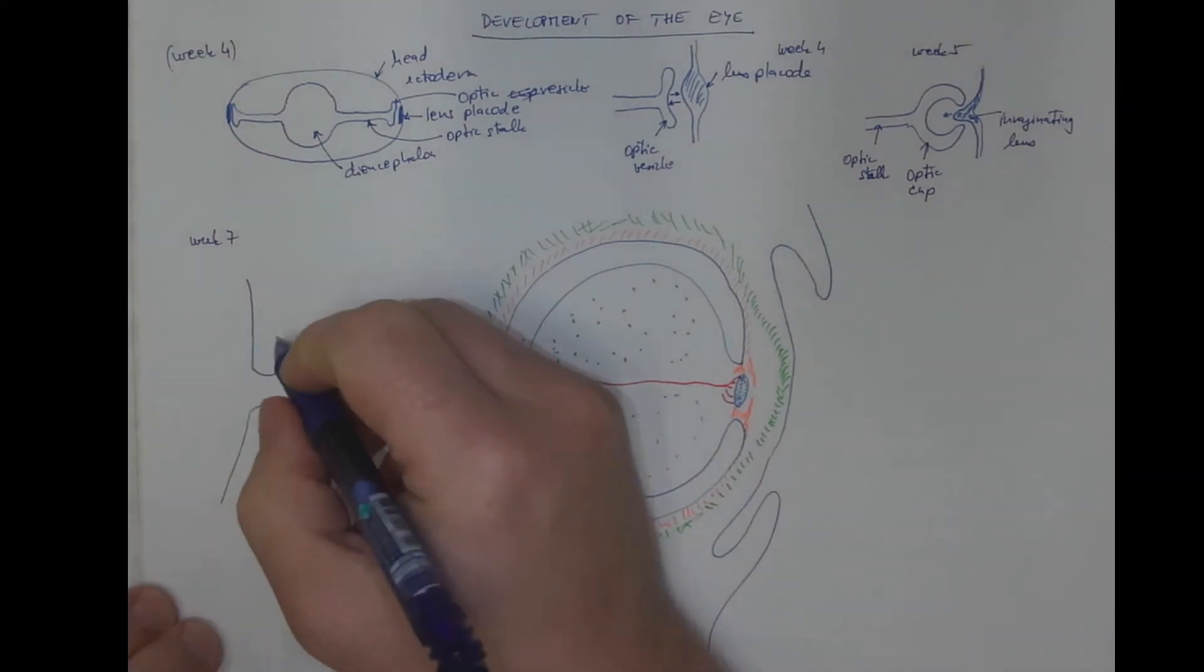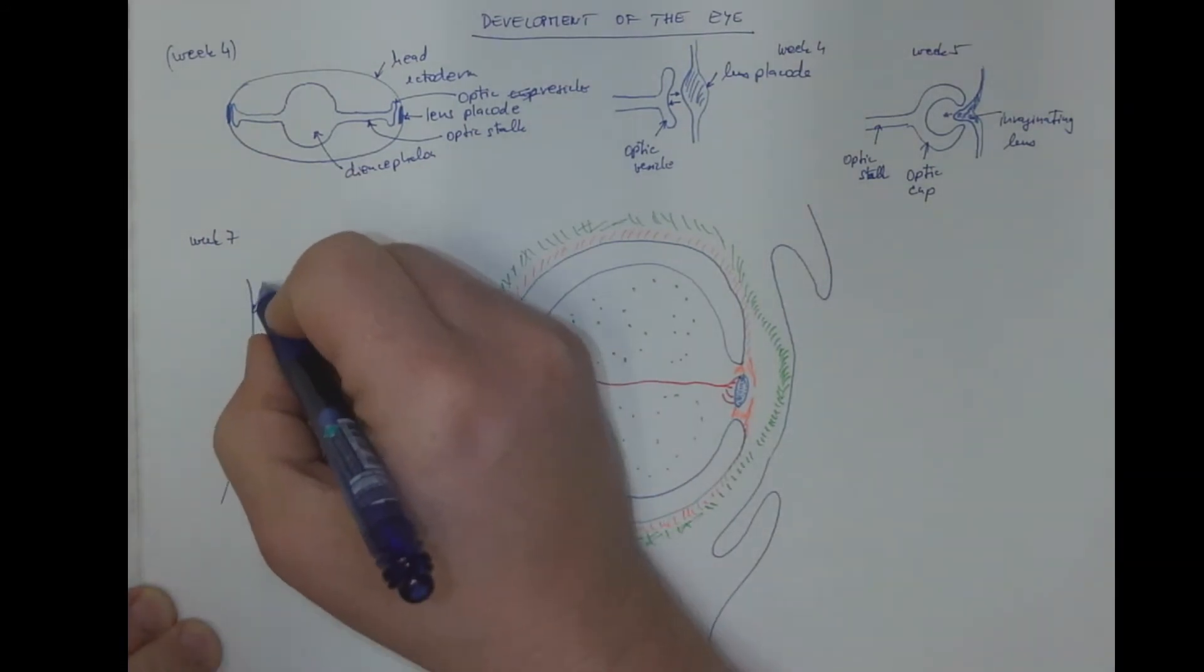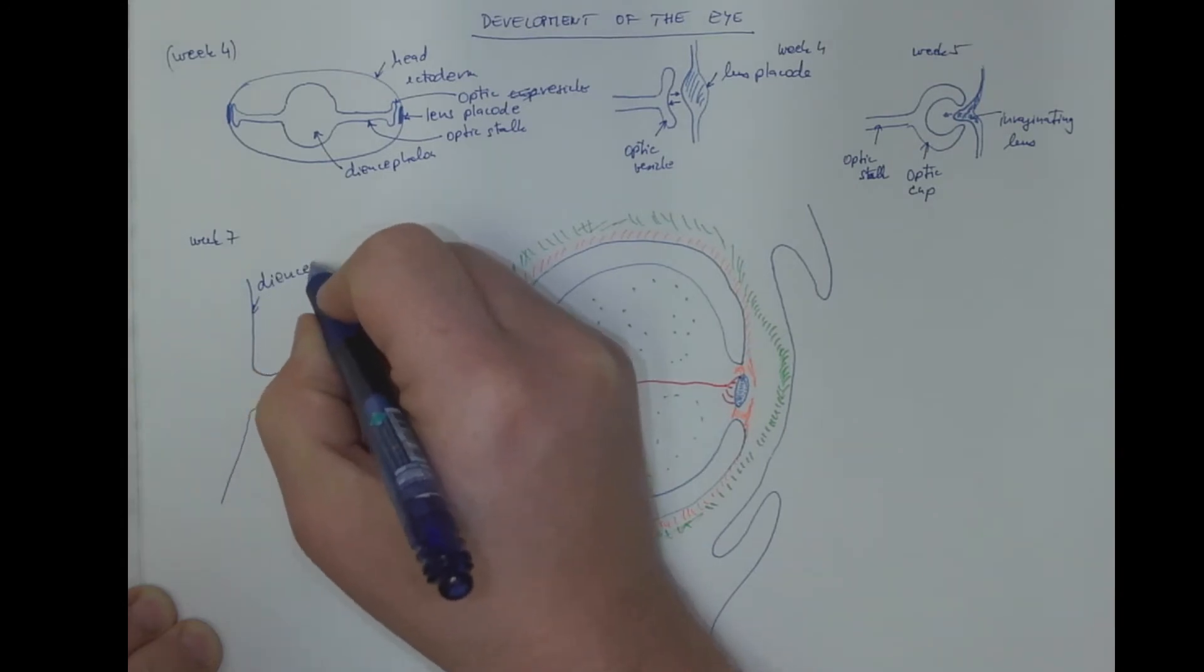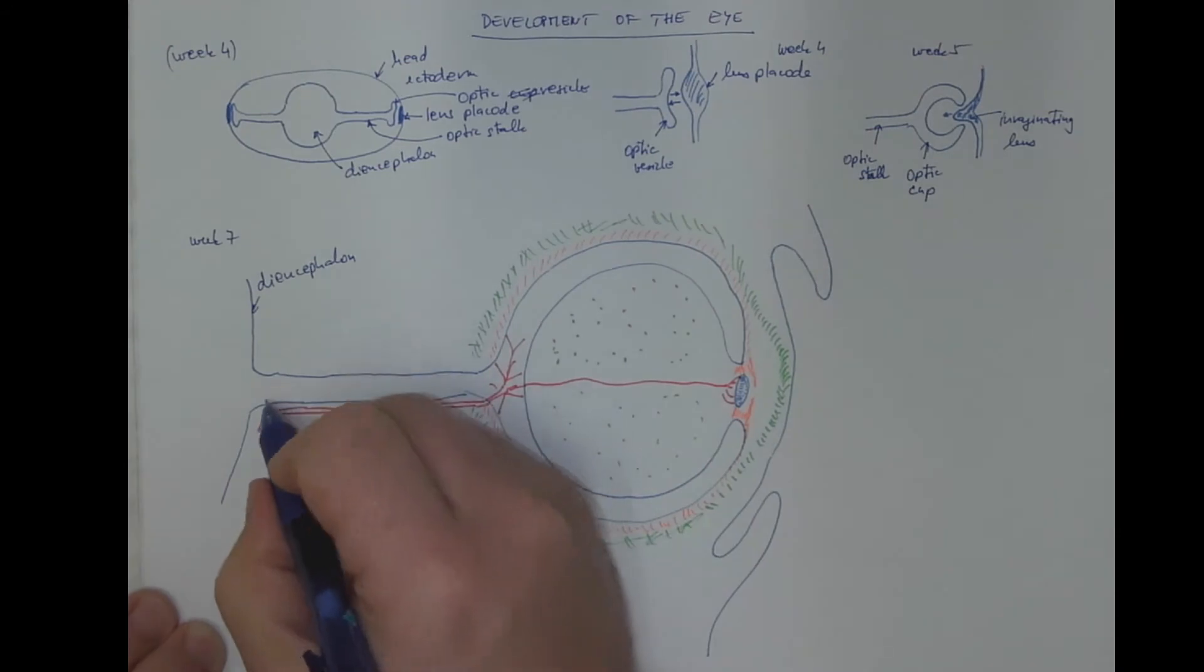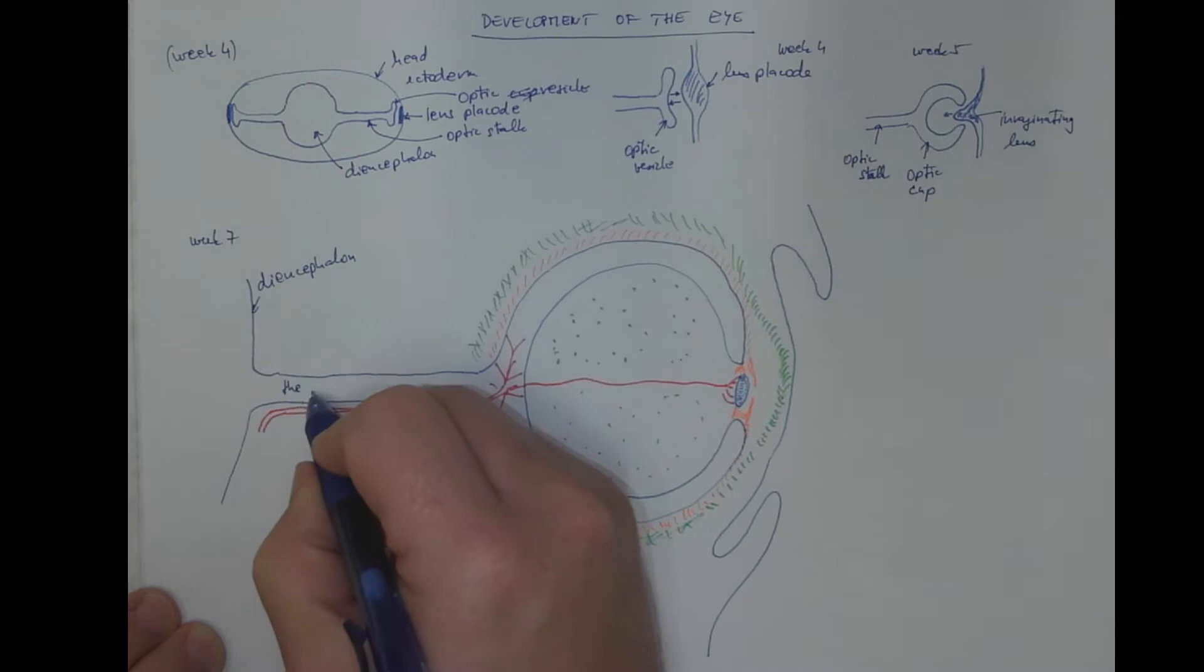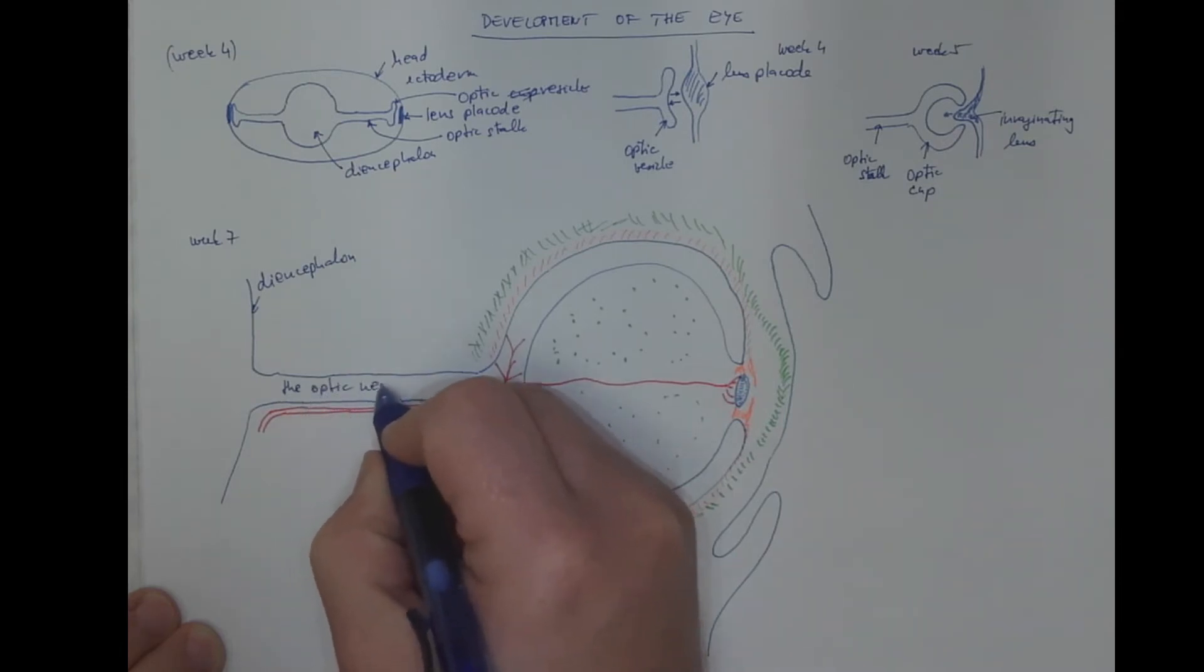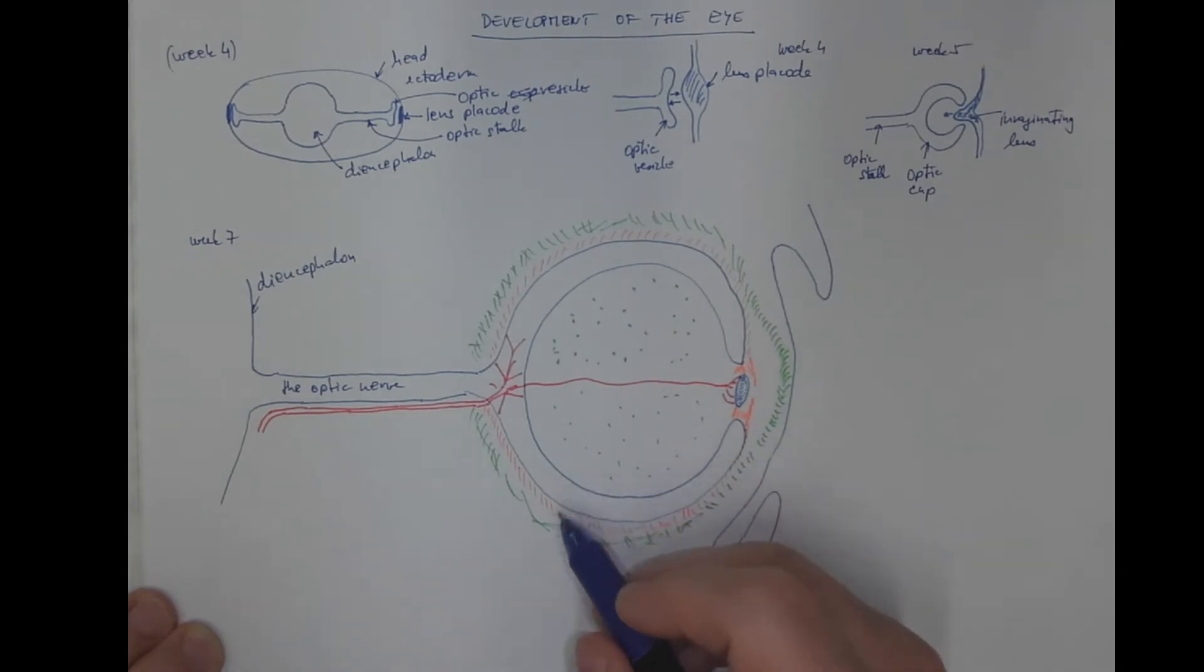Let's label the structures. This is the diencephalon, part of the brain from which the optic nerve grows. Here are the two layers of retina: the inner nervous layer of retina and the outer pigment layer.